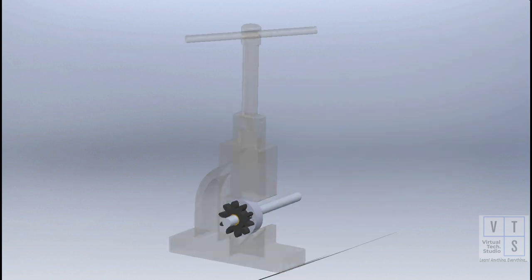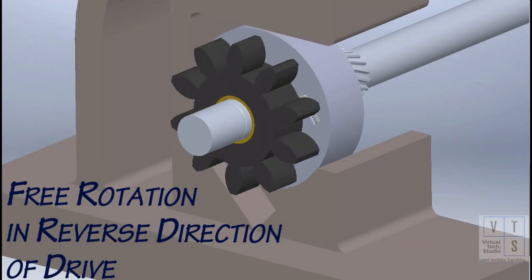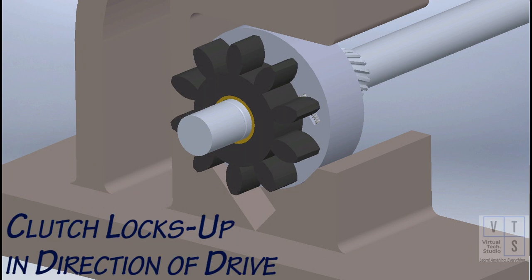Hold the outer race of overrunning clutch and rotate the pinion in reverse direction of drive. The pinion should rotate smoothly in reverse direction. Now, when pinion is rotated in the direction of drive, it should lock up.